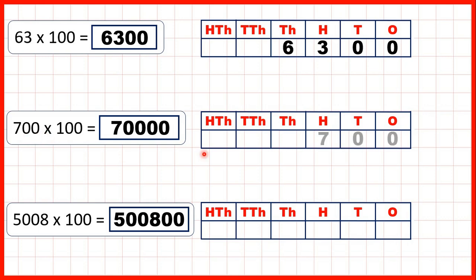Then we had 700 times 100. Again, multiplying by 100 means moving the digits two place values to the left. We can write zeros in our empty 10s and 1s column to give us our answer.